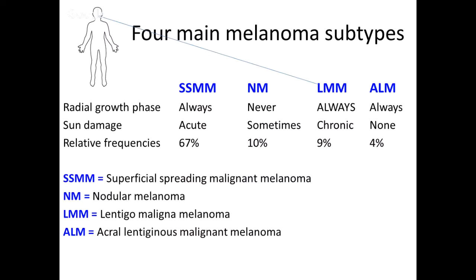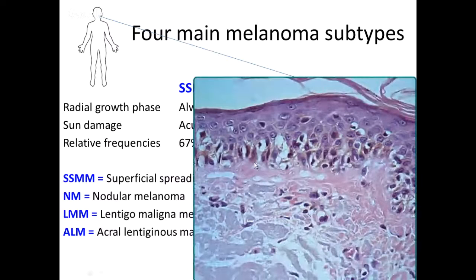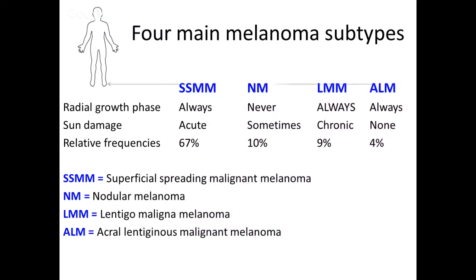These melanomas do not arise in association with nevi, and they tend to occur on the face — areas of really intense chronic sun exposure — maybe the hands, proximal forearms, proximal arms. The proliferation is characterized by a single-file lentiginous proliferation, atypical melanocytes along the basal layer. You may or may not have pagetoid descent. The melanocytes have more of a dendritic morphology — spindle or dendritic — compared to superficial spreading type, which are more round and epithelioid.